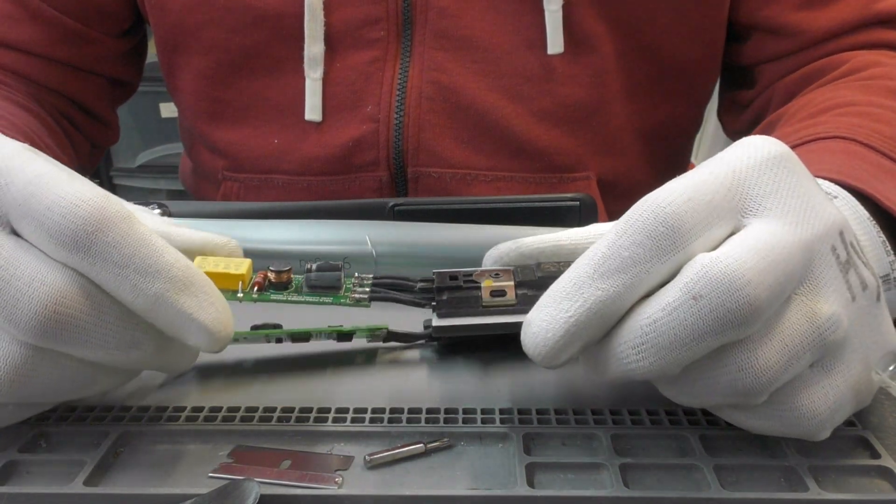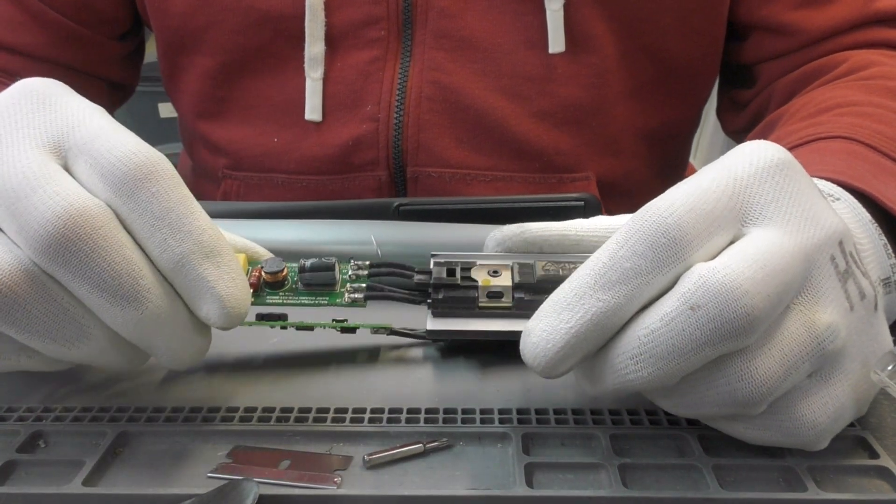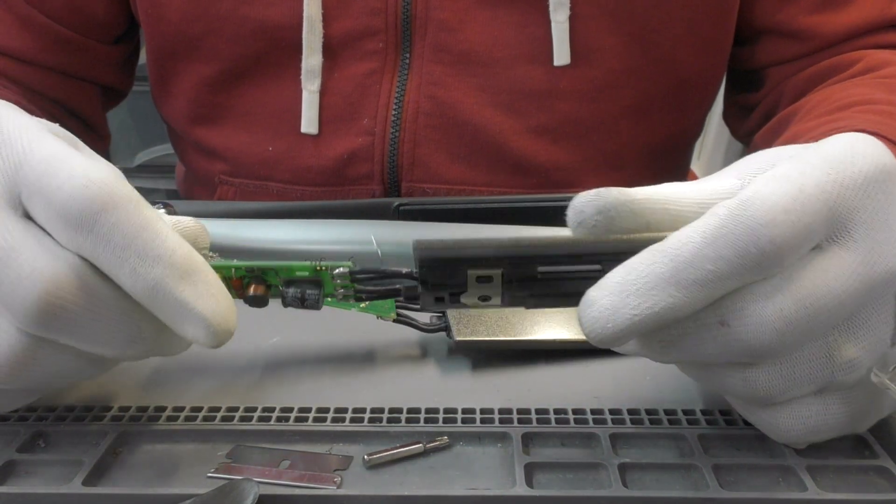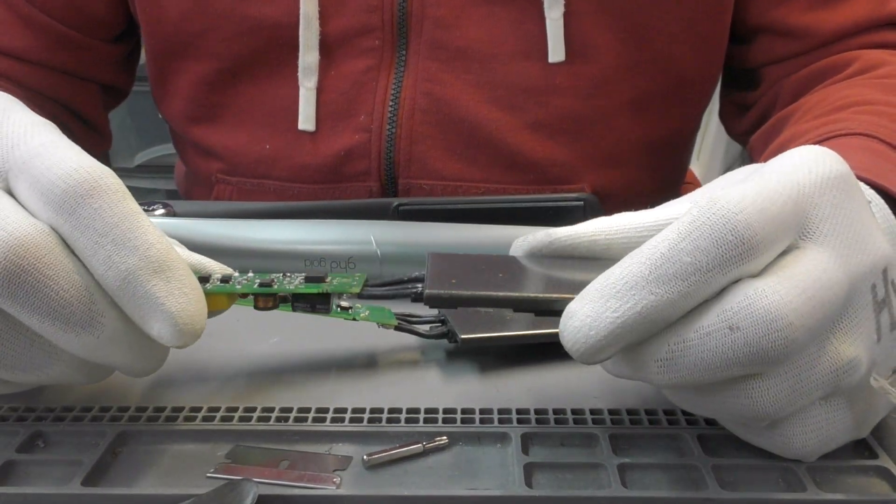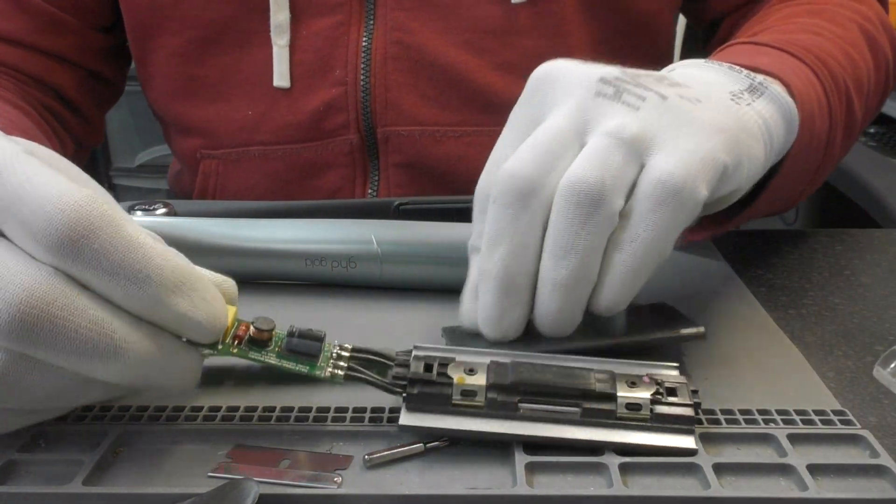What they don't realize is that the elements with the two wires in the middle have to be matched to the circuit board. Now that's done in the factory originally because each one of these elements varies slightly.